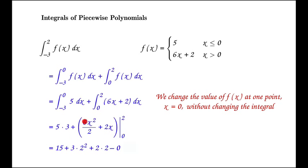5 times 3 is 15. 6 over 2 is 3, so we have 3 times 2 squared plus 2 times 2. When we plug in 0, we get 0 in both cases. Simplifying, we get 31.